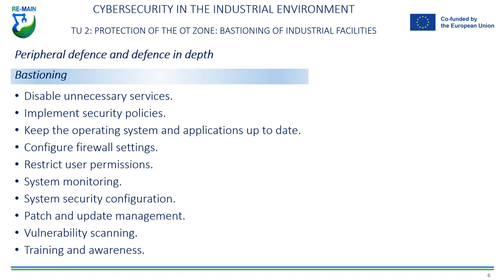However, it is important to note that there is no one-size-fits-all solution to security, and implementing additional measures such as defense in depth can further improve system or network security. In addition to the techniques mentioned above, there are other practices to strengthen security through hardening — including system monitoring. Constant system monitoring can help identify suspicious or unauthorized activities and take preventative measures to prevent potential attacks.